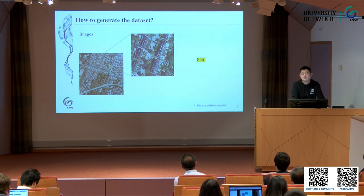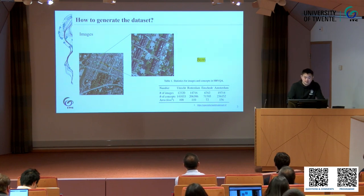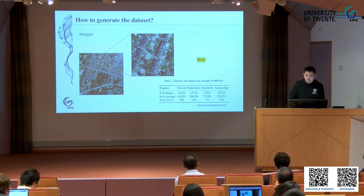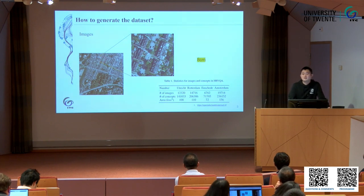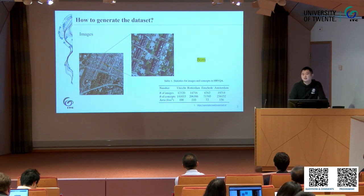For our dataset, we selected four main cities in the Netherlands: Utrecht, Rotterdam, The Hague, and Amsterdam. For these four cities, we collected more than 50,000 images, which cover more than 400 square kilometers — making it a really large-scale dataset for the VQA task.